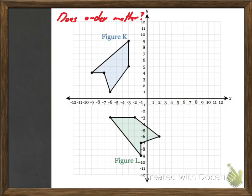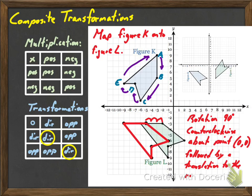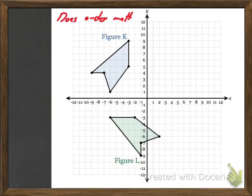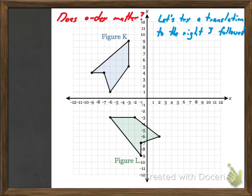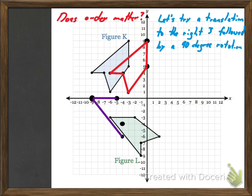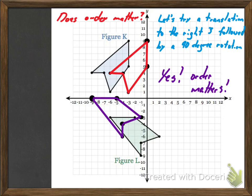Let's say I did this in reverse order — a translation to the right three, followed by a rotation counterclockwise. Let's take a look at that. So here's my translation to the right three, and then I want to rotate this figure 90 degrees. Yeah, order matters — it doesn't go to the same place. So be really, really careful with these, especially when rotations are involved. Order does matter.